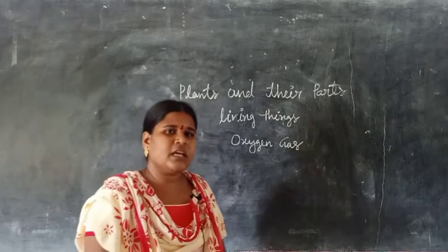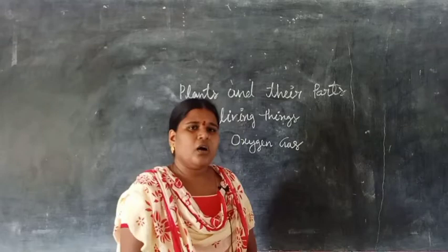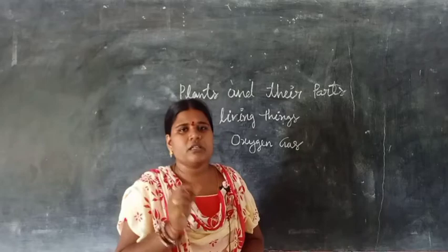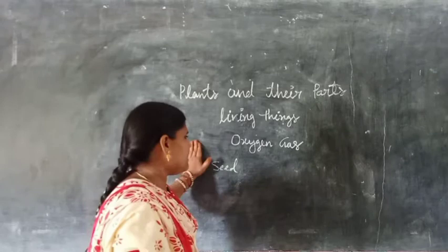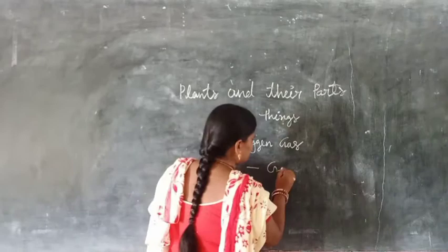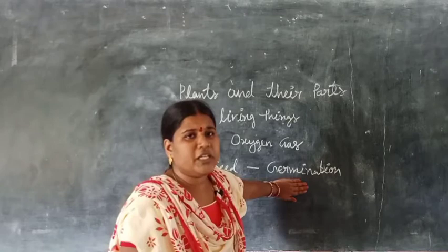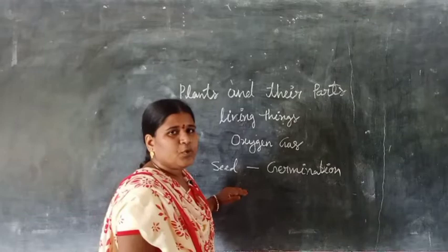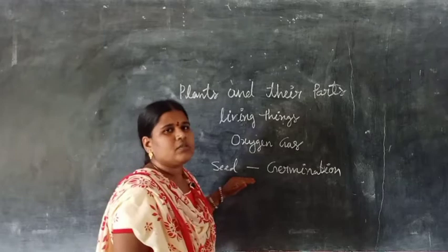Now let us know where plants are grown. Plants can grow in water, on land, and also in the desert. Now let us know how plants grow. Plants can grow from a seed. The process by which a seed grows into a plant is called germination.